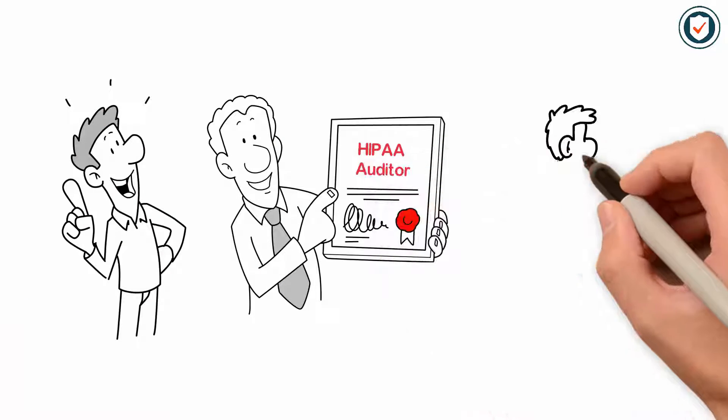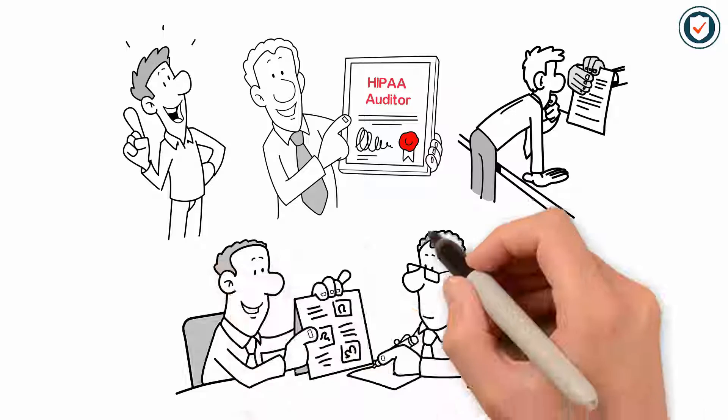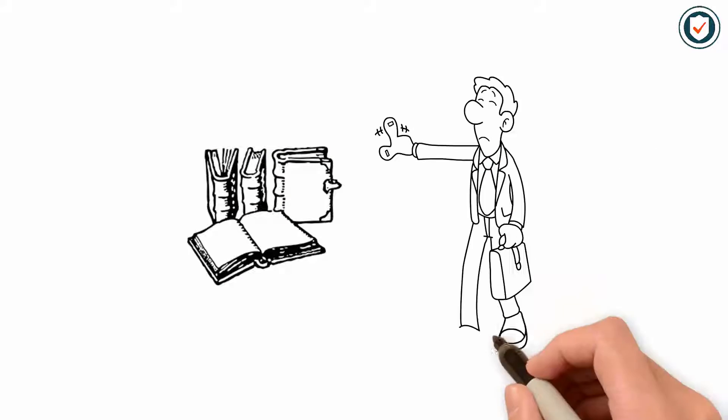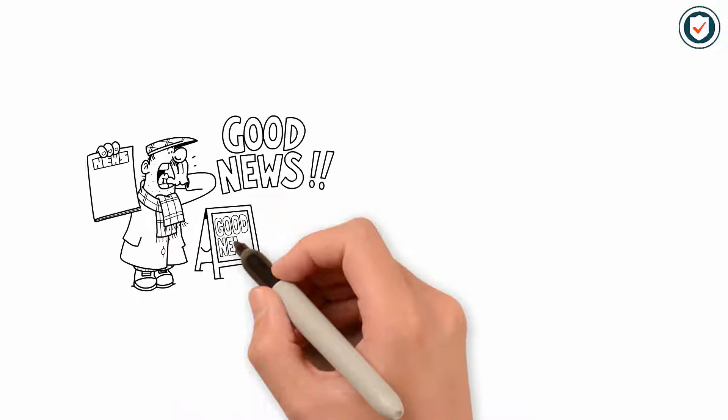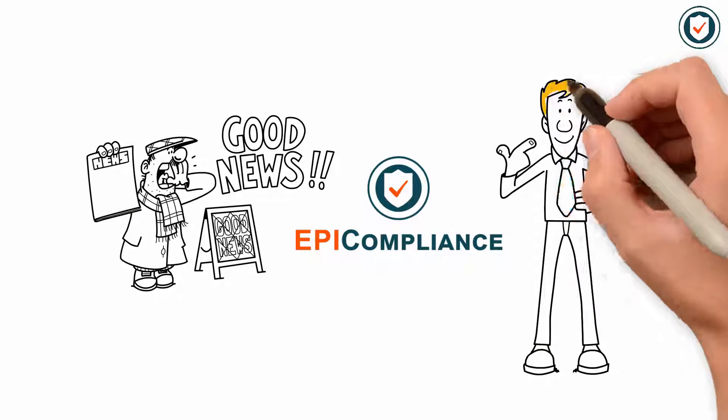The first thing a HIPAA auditor looks for are these policies and that they have been distributed to everyone in your office. A dusty binder on the shelf just will not cut it. Good news: at EPI Compliance, we handle this for you.